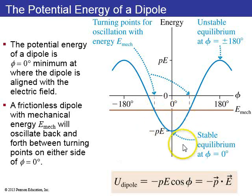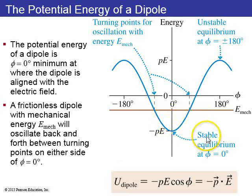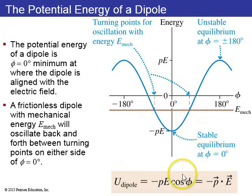A frictionless dipole will oscillate back and forth between turning points on either side of phi equals zero, which is where the dipole is aligned with the electric field.